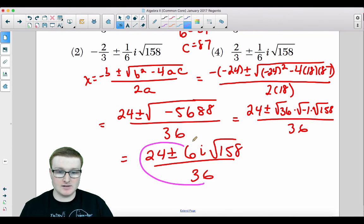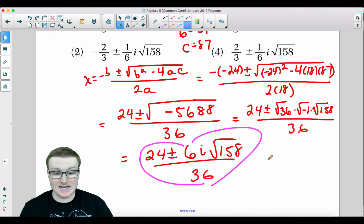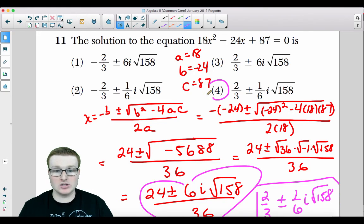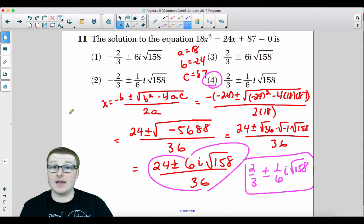24 plus minus the square root of 36 is 6. The square root of negative 1 is your power of i times the square root of 158 divided by 36. Now, I heart division, you're going to simplify these numbers. 24 divided by 36 is 2 thirds plus minus 6 divided by 36 is 1 sixth i radical 158. Ladies and gentlemen, that is the answer to this question. Your answer is choice 4 for that part.